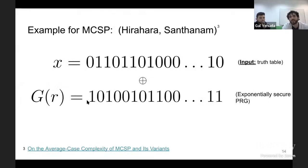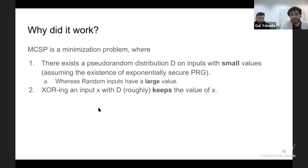Hirahara and Santhanam asked if it's possible to have a pseudo-random self-reduction for NP-complete problems, and suggested that the existence of such a reduction for MCSP further distinguishes MCSP from NP-completeness. The reduction for MCSP works by taking the instance (just a truth table) and XOR-ing it with the output of an exponentially secure pseudo-random generator. The output is pseudo-random almost by definition, and they proved this operation does not change the answer to MCSP by much.